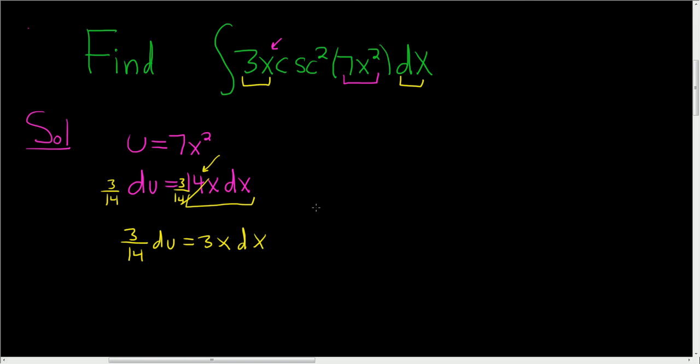Now we're ready to make our substitution. We have the indefinite integral. The 3x and the dx, that's right here, and that's going to be 3 over 14 times du. We can write the 3 over 14 outside and put the du over here. What's left over? Cosecant squared of u, because all this stuff inside here is simply u.